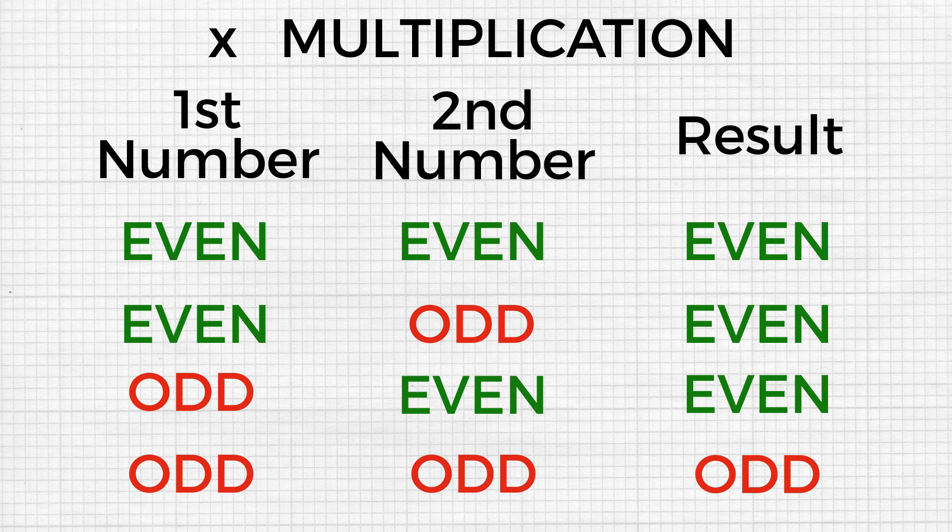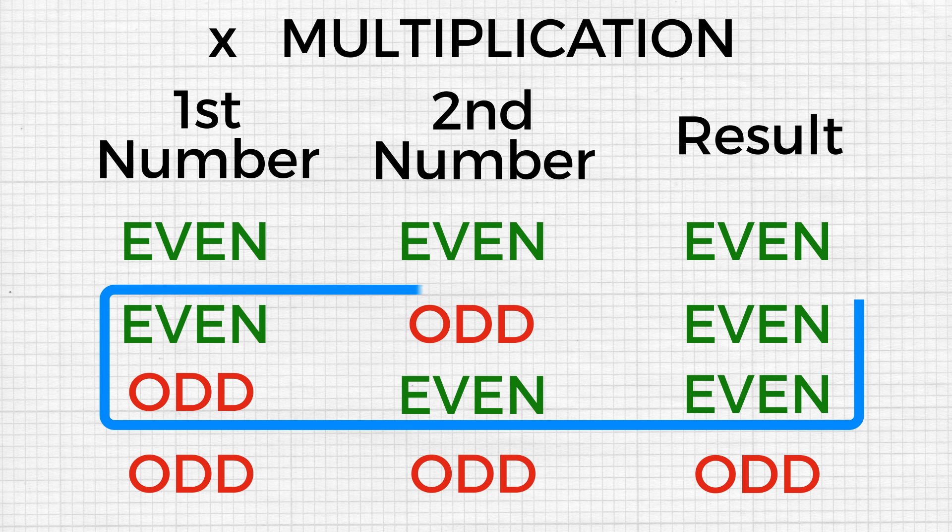So if we have to summarize multiplication rules for even and odd numbers, as long as one of the two numbers is even, which means one is even, one is odd, or both are even.